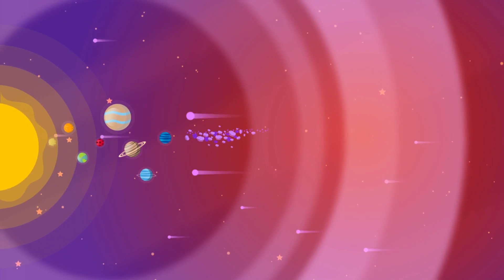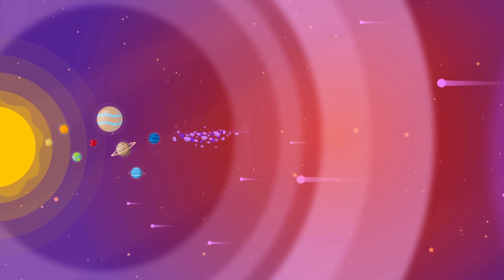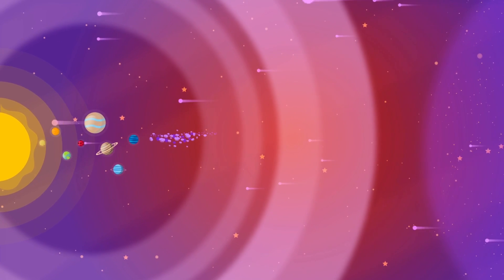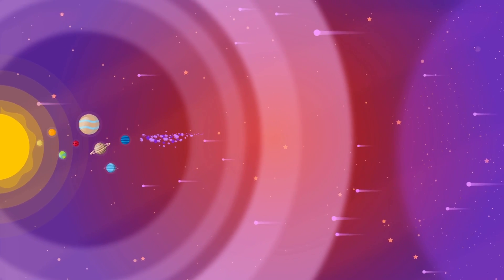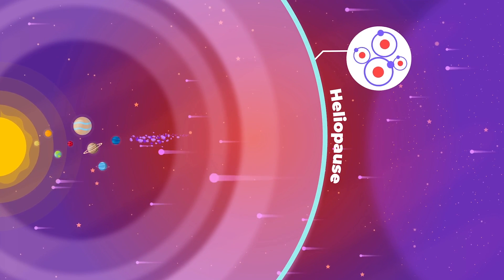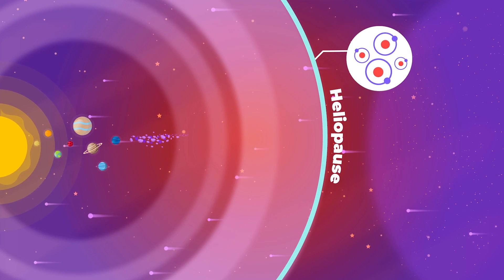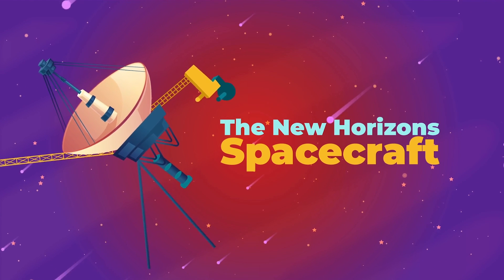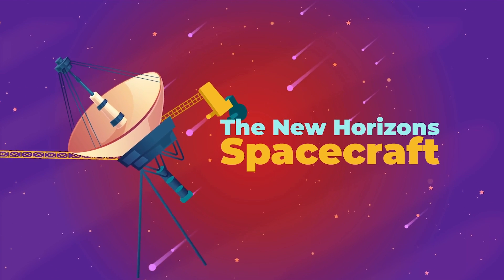The further these particles go, the less energy they have. And at the edge of the solar system, the energy of uncharged hydrogen atoms in interstellar space push back against those emitted by the sun, and this boundary is known as the heliopause. It's believed that here, there is a buildup of hydrogen atoms from interstellar space, and this invisible wall scatters incoming ultraviolet light.